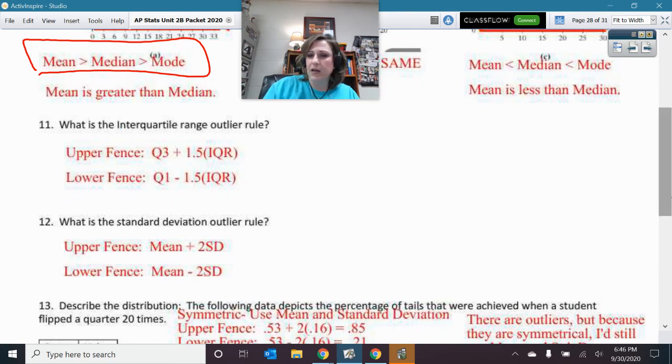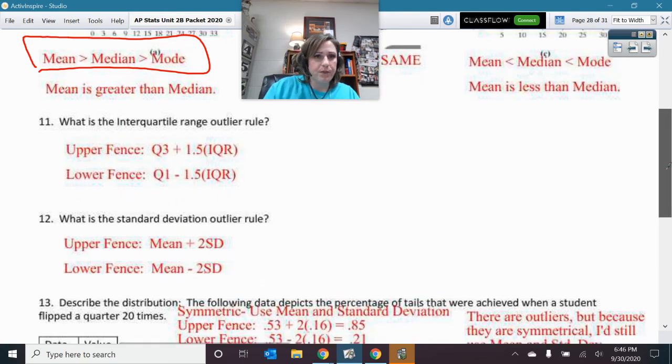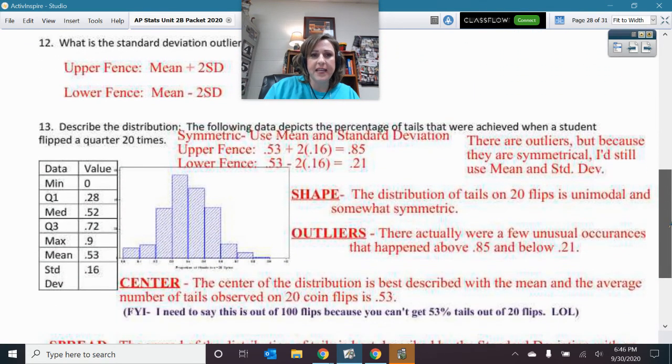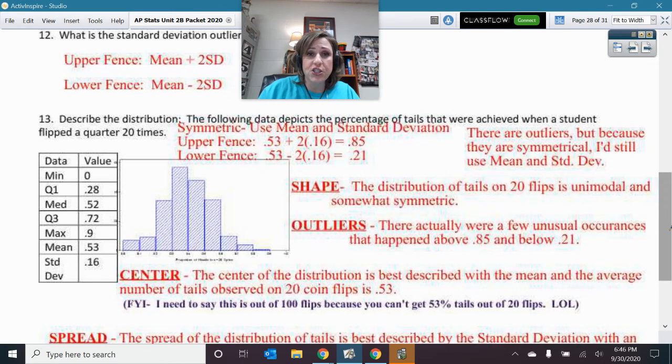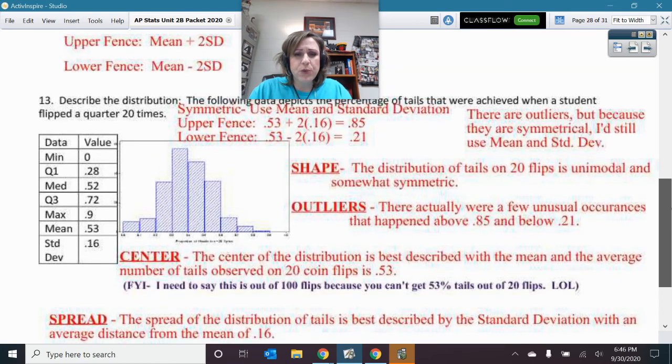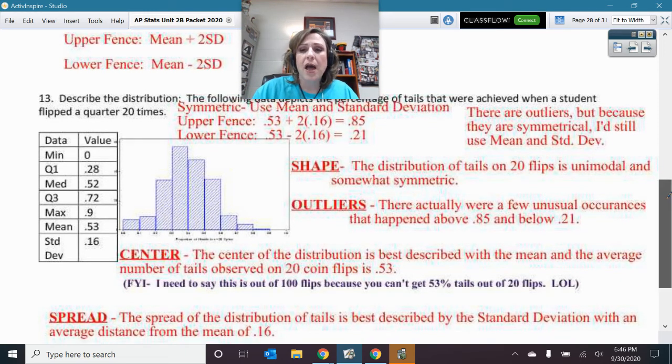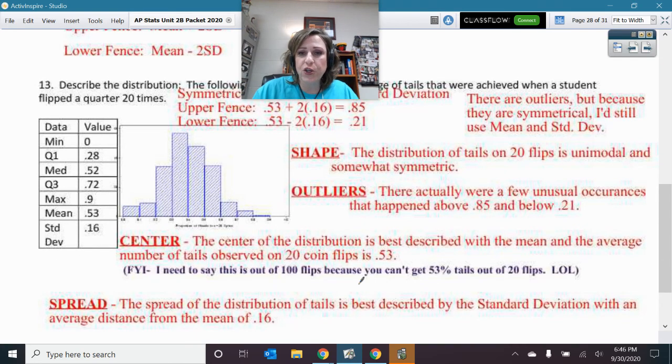All right. Just the real quick IQR and standard deviation outliers. And then here is your describe the distribution with your socks. And be specific. This is about flips of coins and such. I'm just going to leave this one here. Honestly, I did not put one of these on the quiz. So this is just another practice for you to take a look at. And I'll just leave that there. You can check on your own.